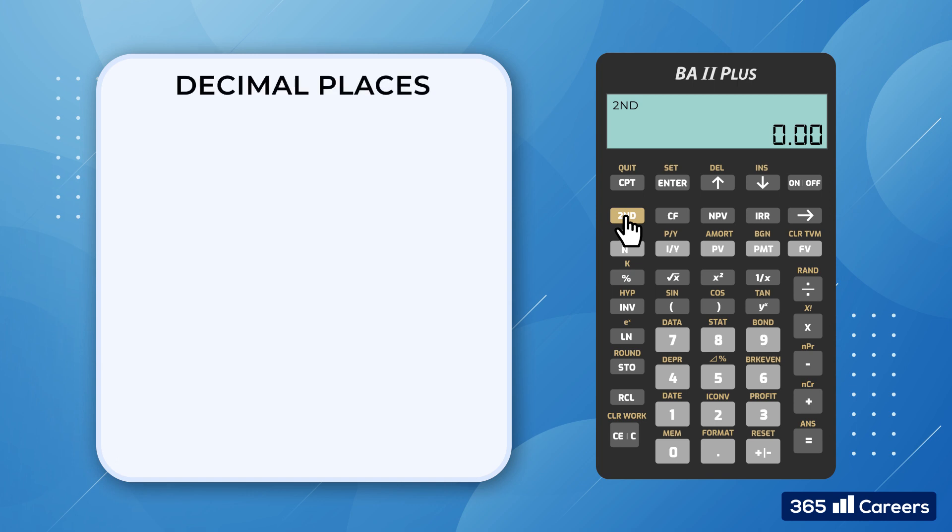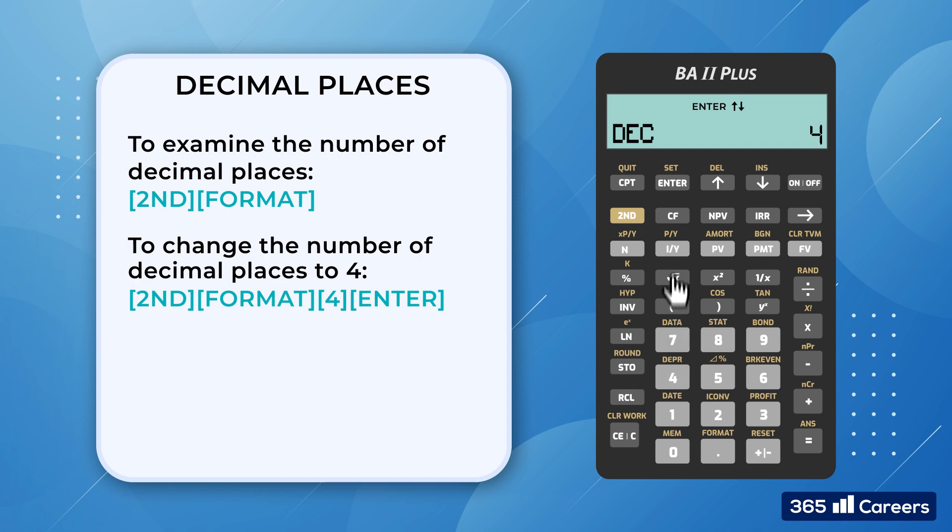That should be enough to answer all the questions you will face in the CFA or other exams requiring the use of a financial calculator. All right, let's set the number of decimal points to 4. We press 2nd plus format. Currently it's equal to 2. We press 4 and then enter to change the setting of the device, and 2nd quit to exit the setting. Great!